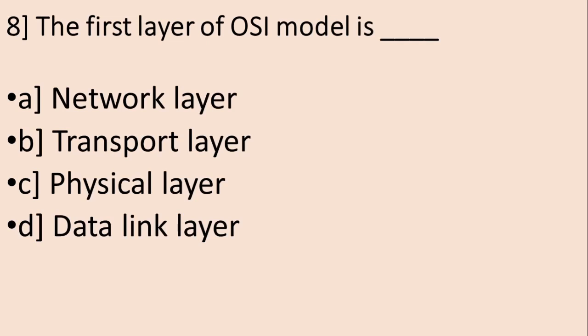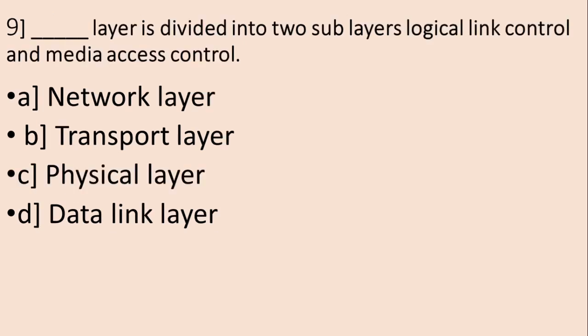Question number 8: The first layer of the OSI model is — A. Network Layer, B. Transport Layer, C. Physical Layer, D. Data Link Layer. The correct answer is C, Physical Layer.